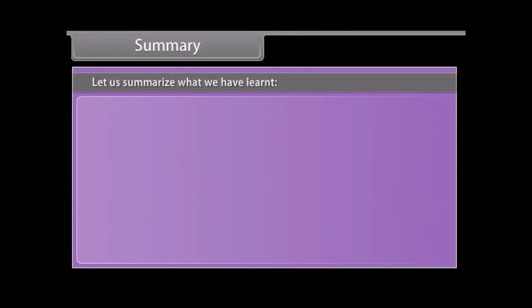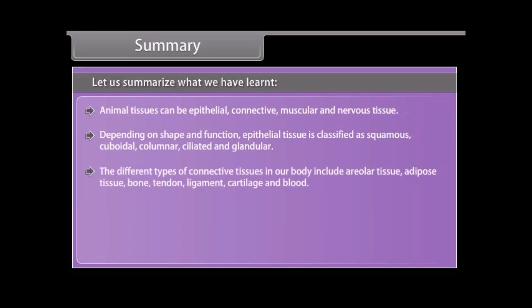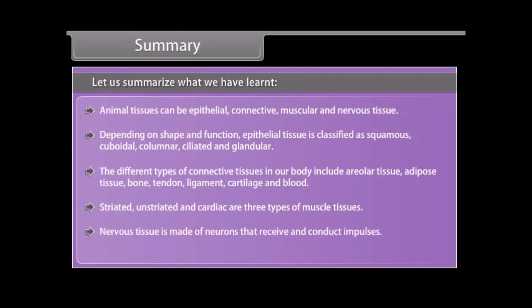Let us summarize what we have learnt. Animal tissues can be epithelial, connective, muscular and nervous tissue. Depending on shape and function, epithelial tissue is classified as squamous, cuboidal, columnar, ciliated and glandular. The different types of connective tissues in our body include areolar tissue, adipose tissue, bone, tendon, ligament, cartilage and blood. Striated, unstriated and cardiac are three types of muscle tissues. Nervous tissue is made of neurons that receive and conduct impulses.